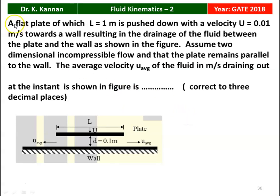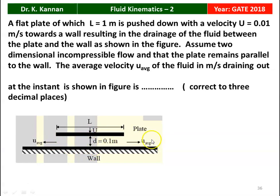The next question, again from the 2018 Question Paper: a flat plate of length l = 1 m is pushed down with velocity U = 0.01 m/s toward a wall, draining the fluid between the plate and the wall. Assuming two-dimensional flow and the plate remains parallel to the wall, find the average velocity U_avg of the fluid draining out (correct to three decimal places). The answer is 0.05 m/s.